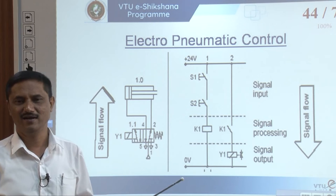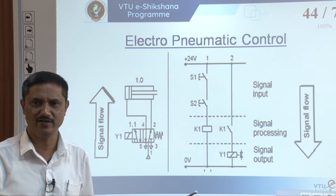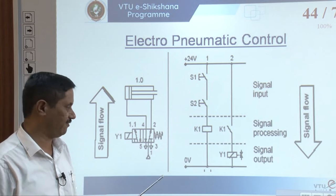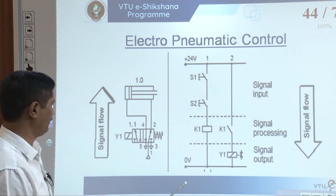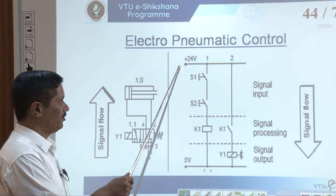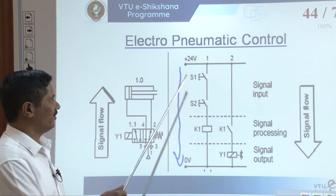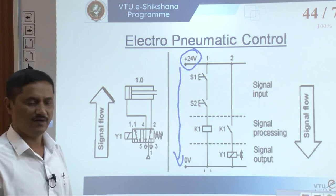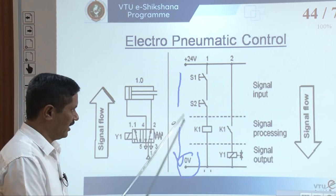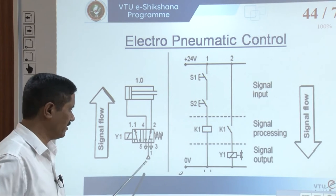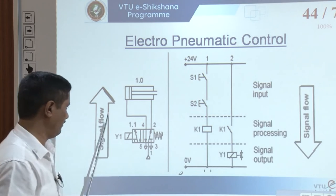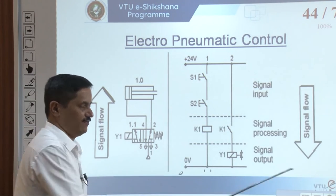Now let us start with some basic concepts of electro-pneumatic control systems. Air flow always flows from bottom to top, while the electrical signal flows from top to bottom. The 24-volt supply is on the top side and 0 volt is at the bottom. Electrical supply flows top to bottom and air flows bottom to top — that is why we show one arrow for air and another for electrical supply.